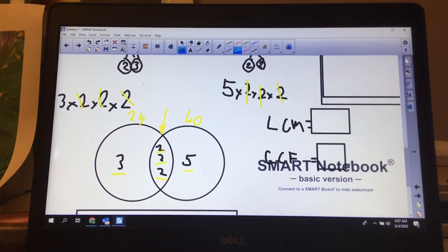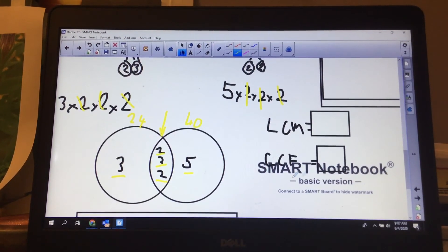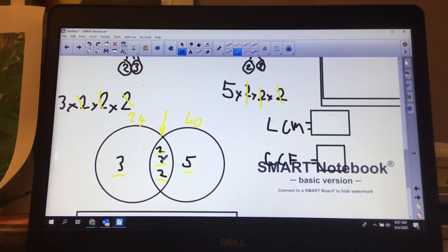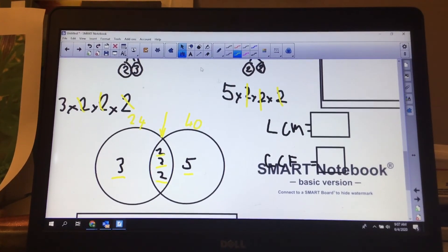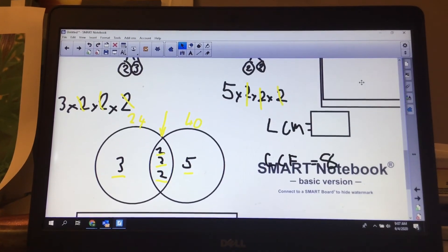So I always like to start with my greatest common factor because it's the math in the middle. 2 times 2 times 2. 2 times 2 is 4, times 2 is 8. My greatest common factor is going to be 8.